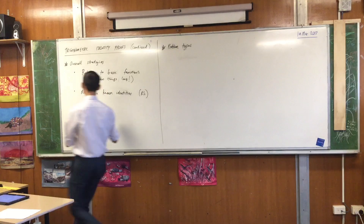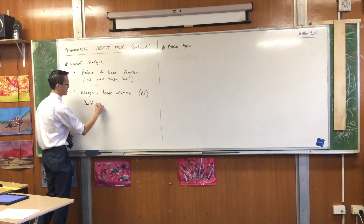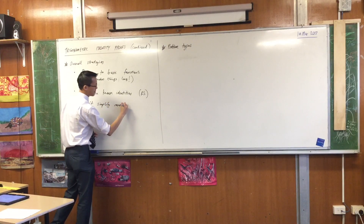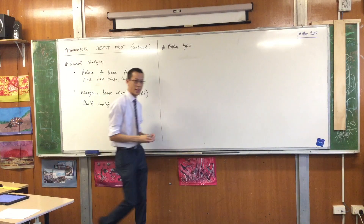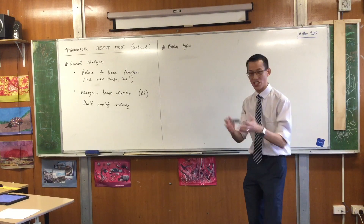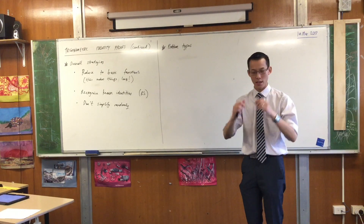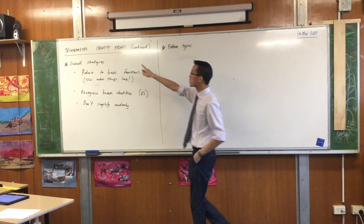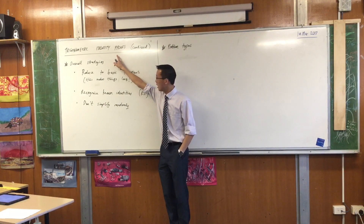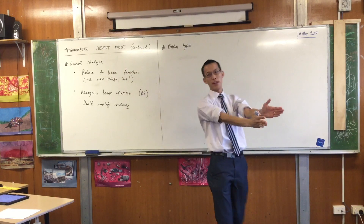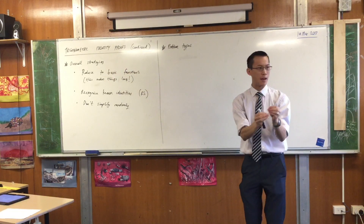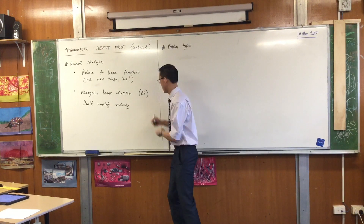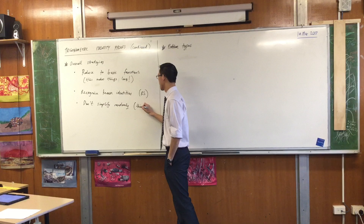Thirdly, don't simplify randomly. Our brains are geared to simplify — you see surds, you start rationalizing; you see things in brackets, you start expanding. But when you are trying to prove something, you're trying to go somewhere specific — not just the simplest form, but a particular kind of form, whatever they provide for you. So don't simplify randomly. Think about the goal.